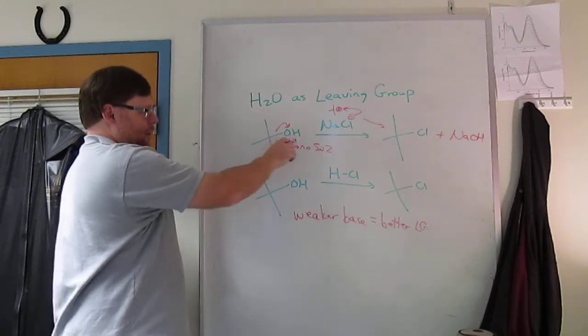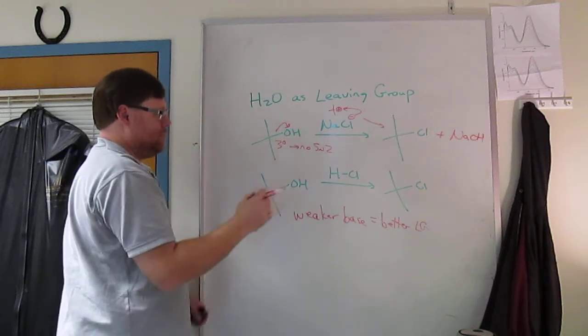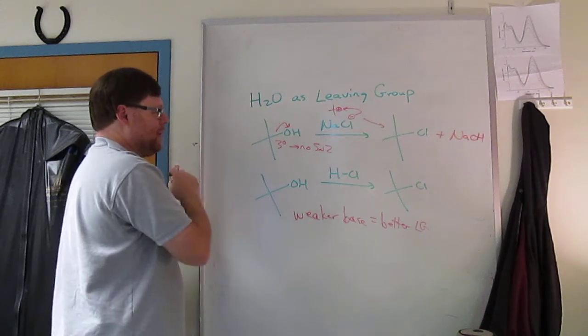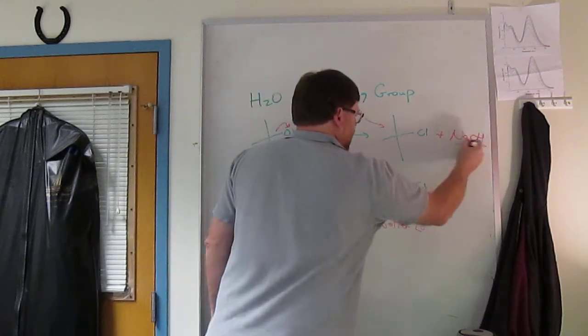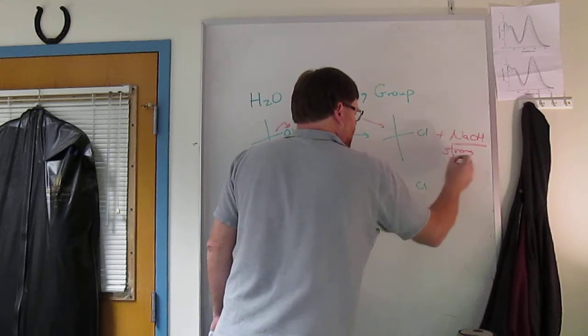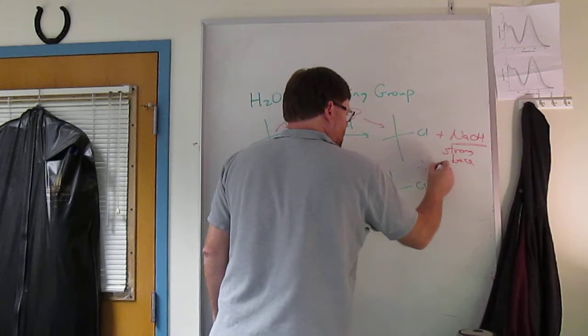So you're going from sodium chloride, pretty stable, you know, nice and neutral. T-butanol is nice and neutral, and you're making a strong base. Therefore, it's a poor leaving group.